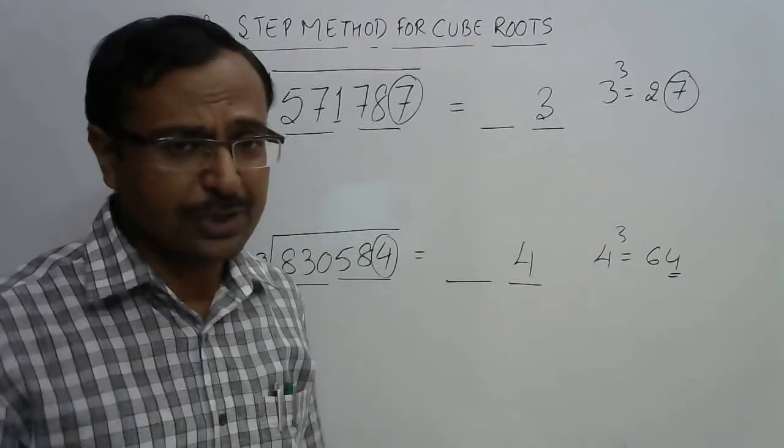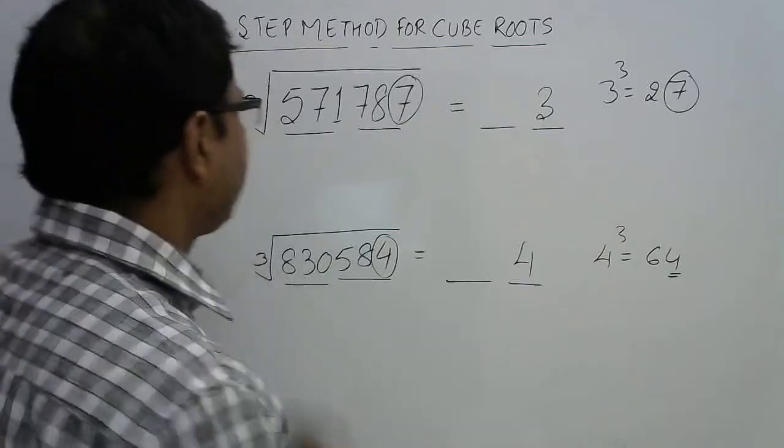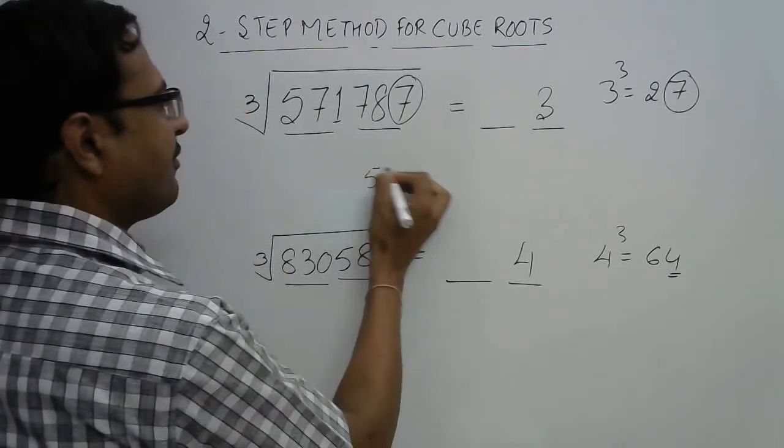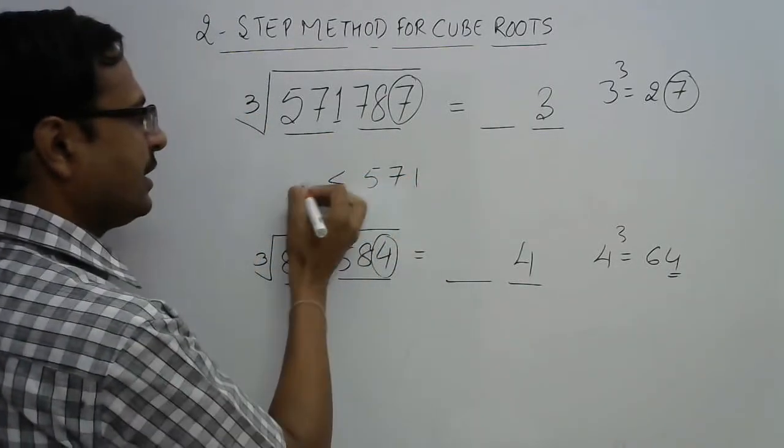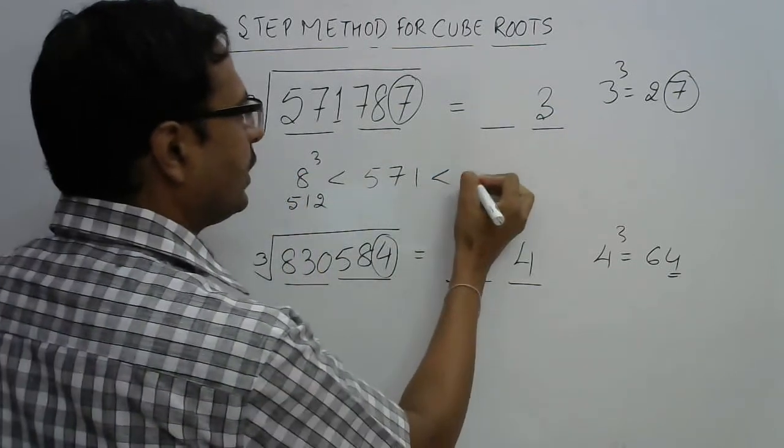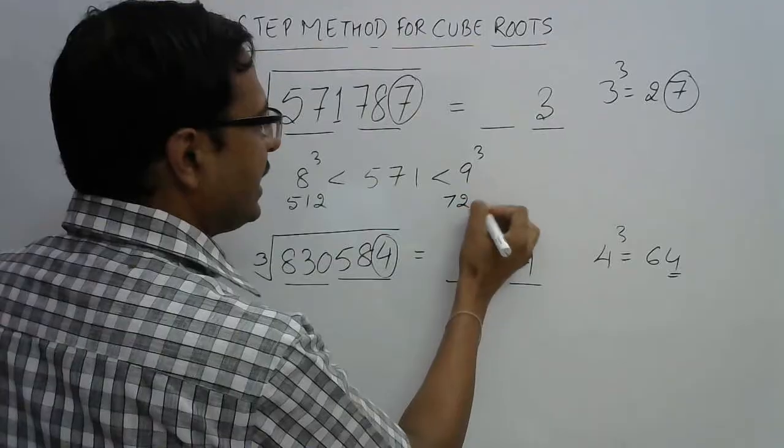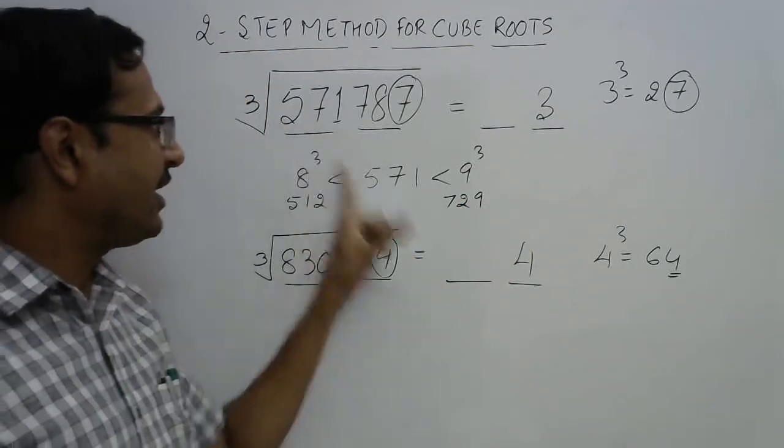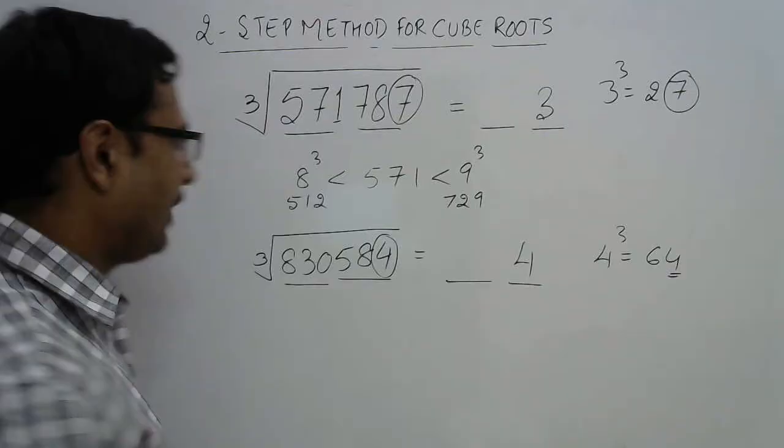Now see, 571. 571 lies between 8 cube—8 cube is 512—and 9 cube—9 cube is 729. So 571, does it lie between these two? Yes it does. And what is the smaller number here? 8.